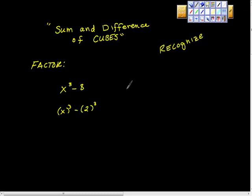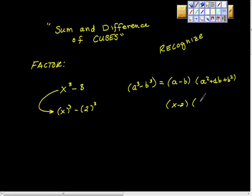The difference of cubes rule says this: if we have a³ - b³, then we can break that into these two factors, and that's (a - b) times (a² + ab + b²). So if we can recognize it, we can break it into this.